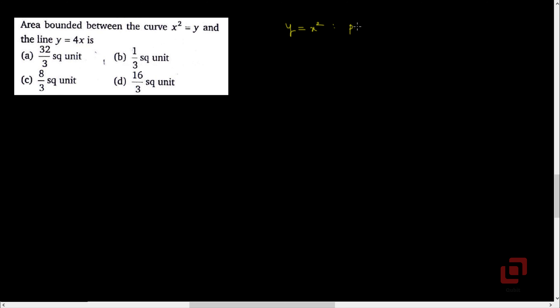Next question: the area bounded between the curve x squared equal to y and the line y equal to 4x. We are given two curves: y equal to x squared, which is a parabola, and the straight line y equal to 4x. As this equation does not contain any constant term, this line passes through the origin. The parabola y equal to x squared is symmetric about the y-axis as it contains even powers of x.